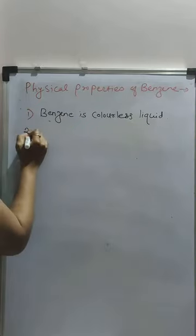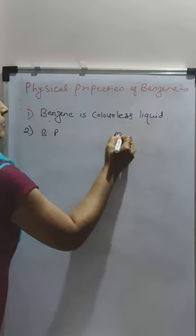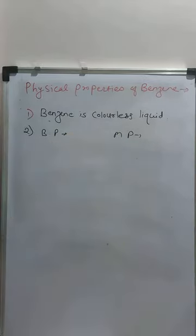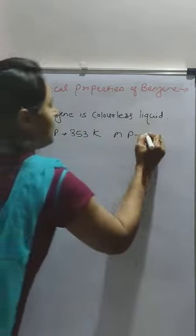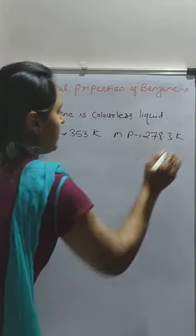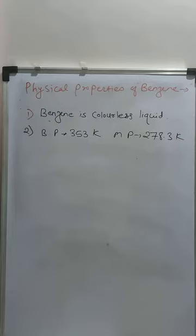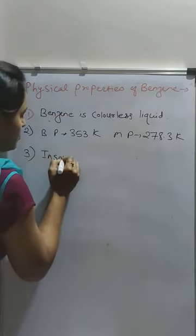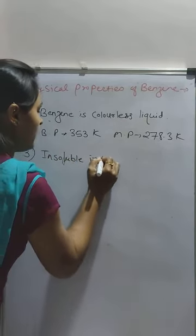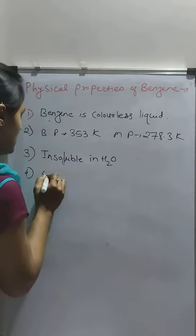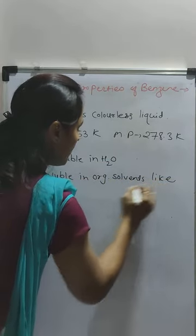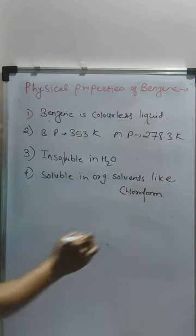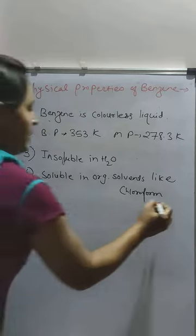Now about melting point and boiling point: the boiling point of benzene is 353 Kelvin, while the melting point is 278.3 Kelvin. Benzene is insoluble in water but it is soluble in organic solvents like chloroform, ether, etc.